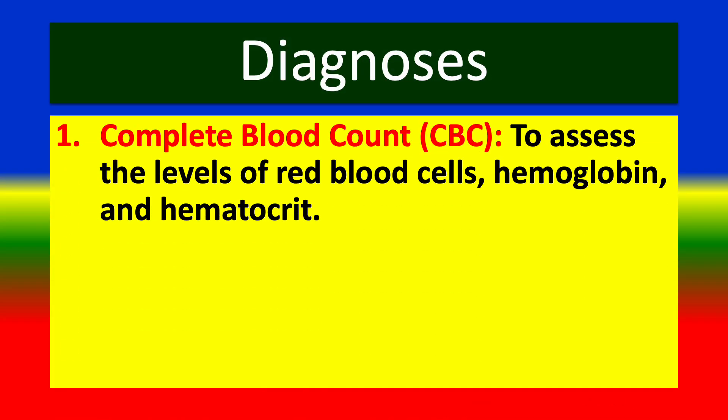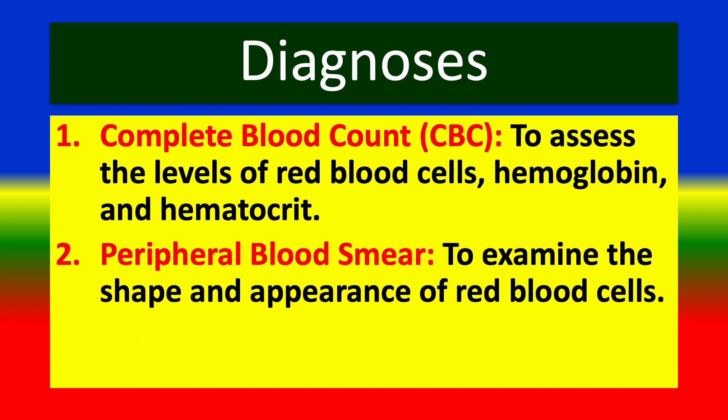Diagnosis: (1) Complete blood count (CBC) — to assess the levels of red blood cells, hemoglobin, and hematocrit. (2) Peripheral blood smear — to examine the shape and appearance of red blood cells.